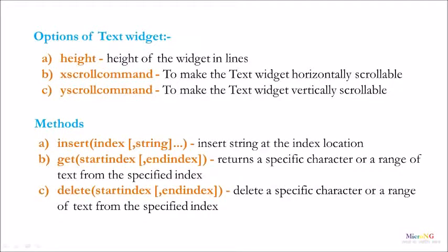The important methods of the Text widget. The first one is insert. It takes two parameters: the first is the index, and the second is the string, which is optional. It is used to insert a string at the index location. The second method is get. It takes two parameters: the starting and ending index. It returns a specific character or a range of text from the specified index.